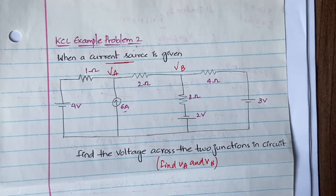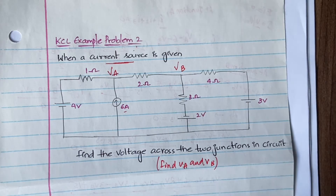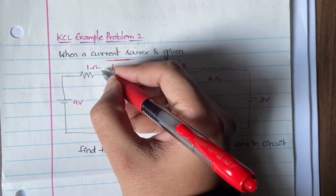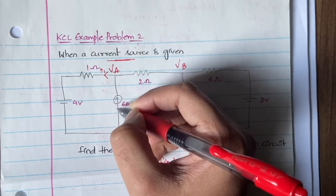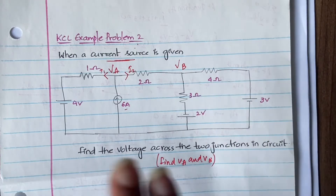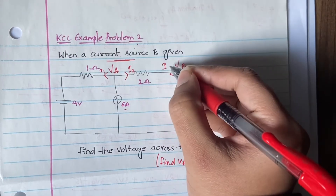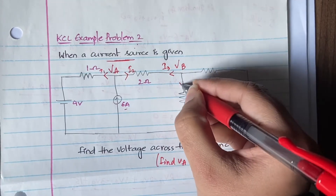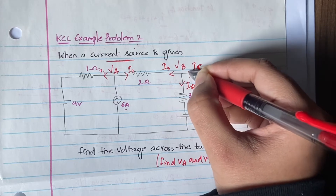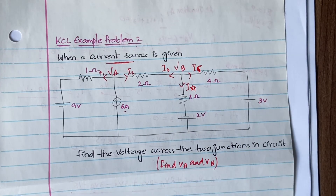You have identified all the junctions — that's step one done. The second step is to assume the directions of current. If the direction of current is not given, assume all currents in one direction — we are assuming all currents are outgoing. For the branch with a given current, leave it as is. For other branches, assume i1 outgoing, i2 outgoing, i3 outgoing, and i5 outgoing.